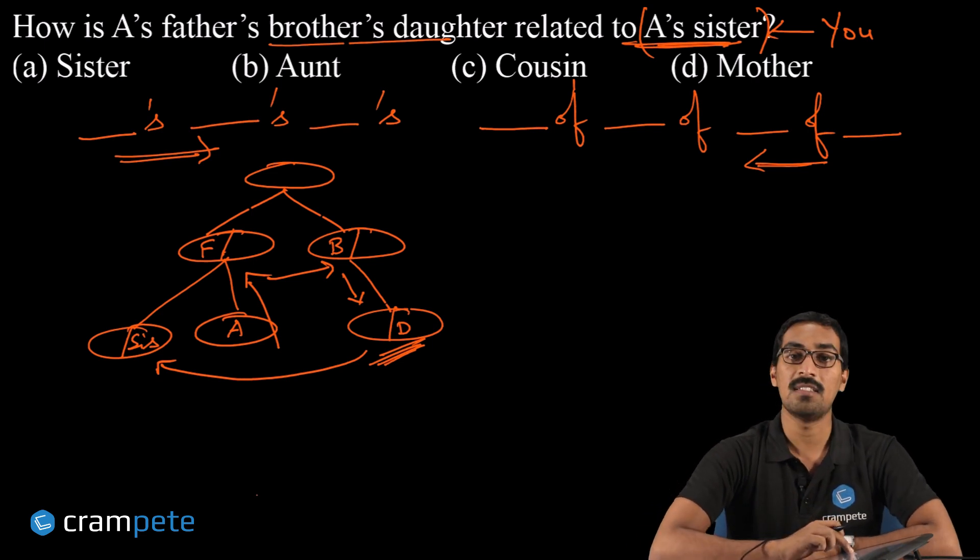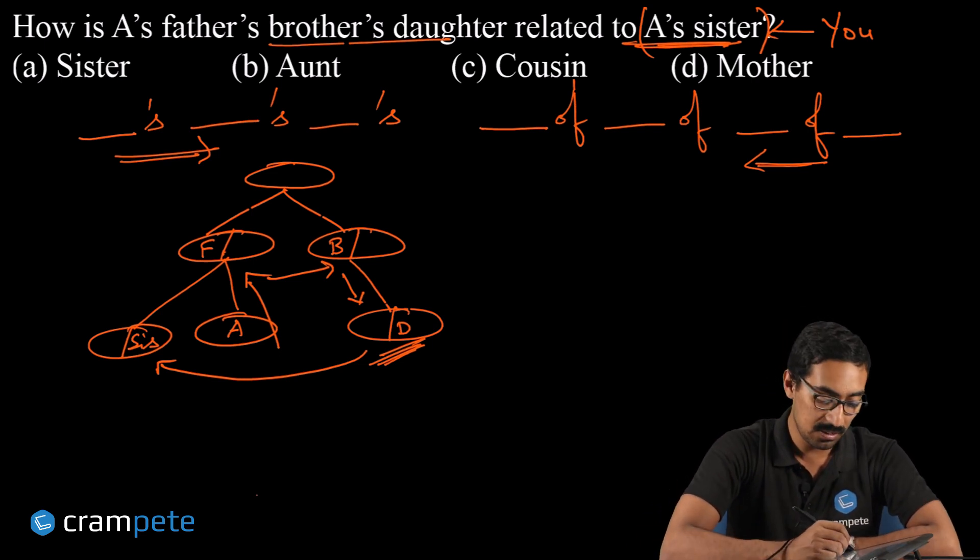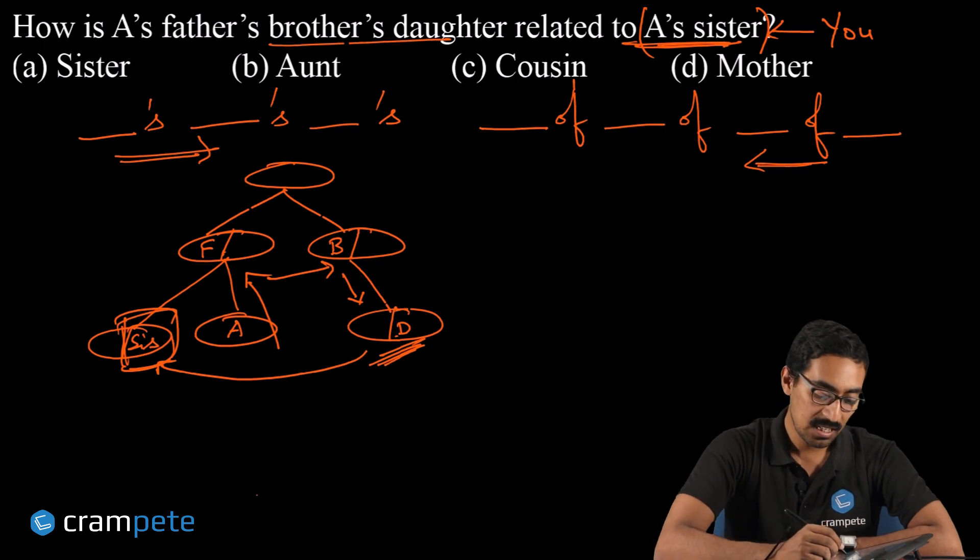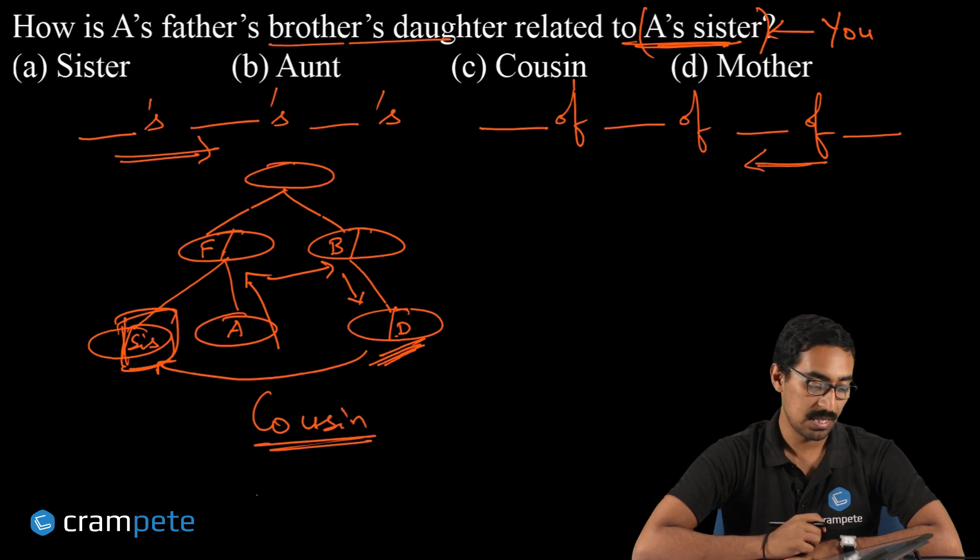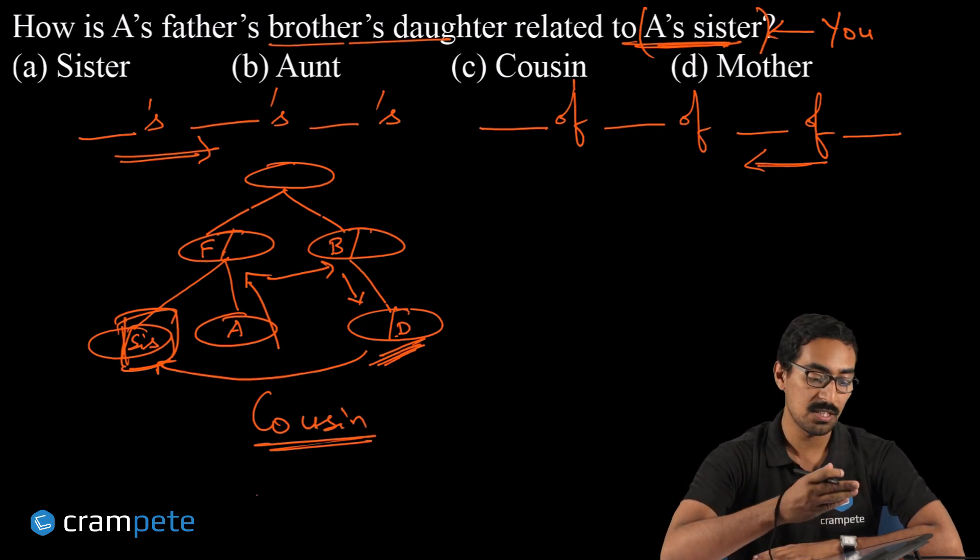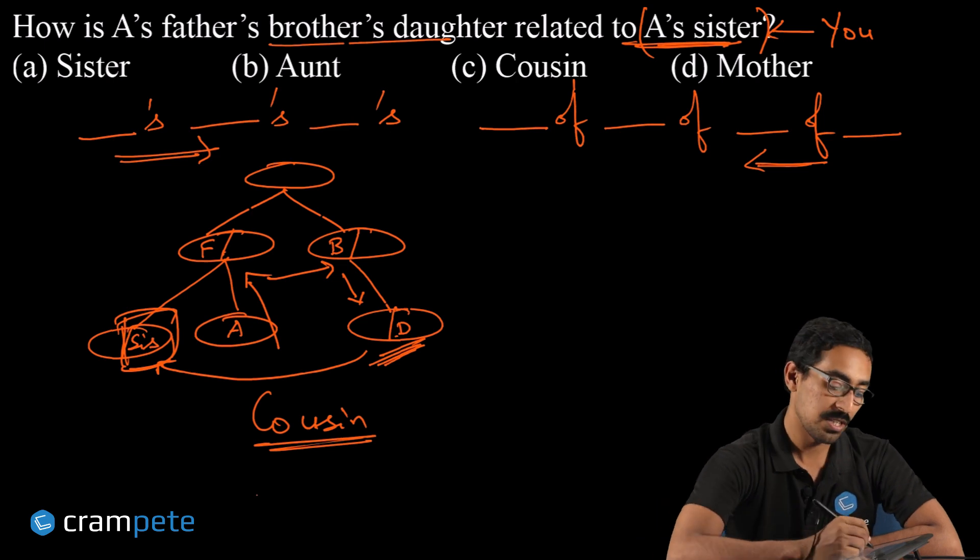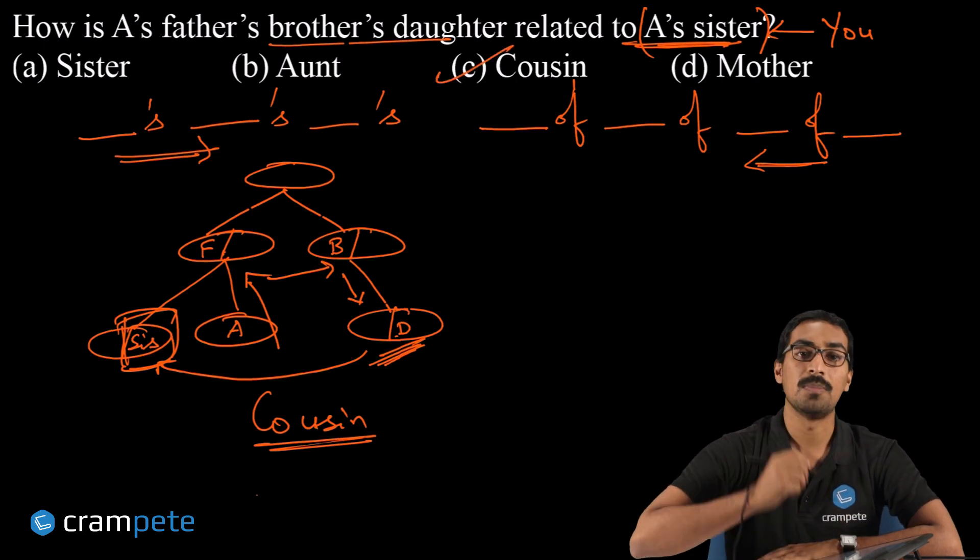So right now you are A's sister. You are the sister person. Who is this D to you? How is D related to you? Yes, clearly the answer is cousin. So the final answer to the question 'How is A's father's brother's daughter related to A's sister?' is cousin, which is clearly given in option C.